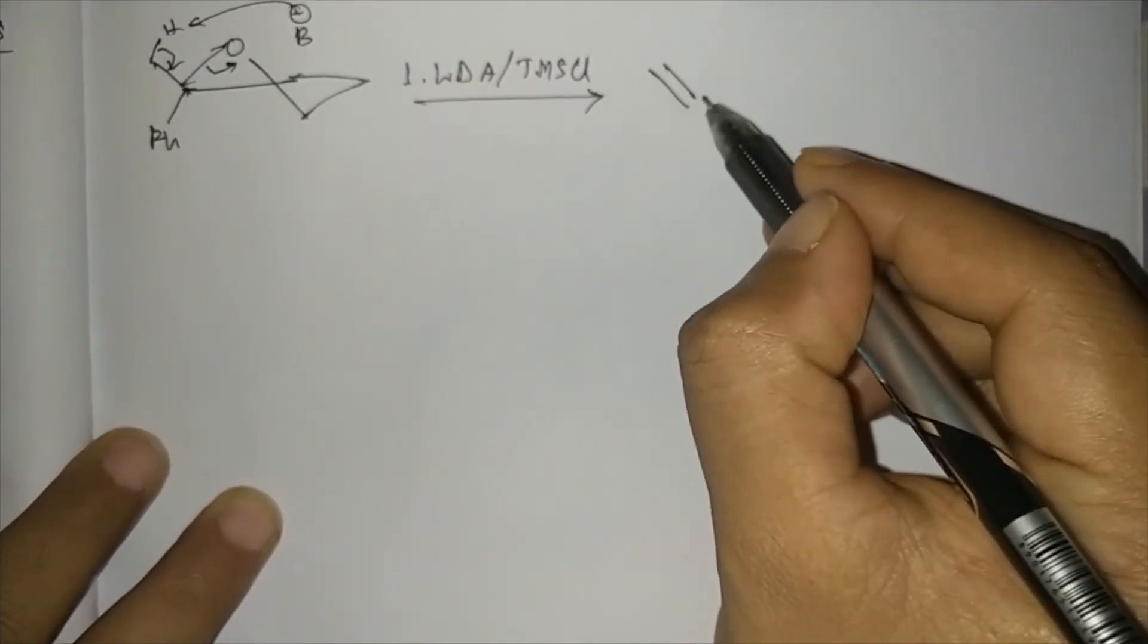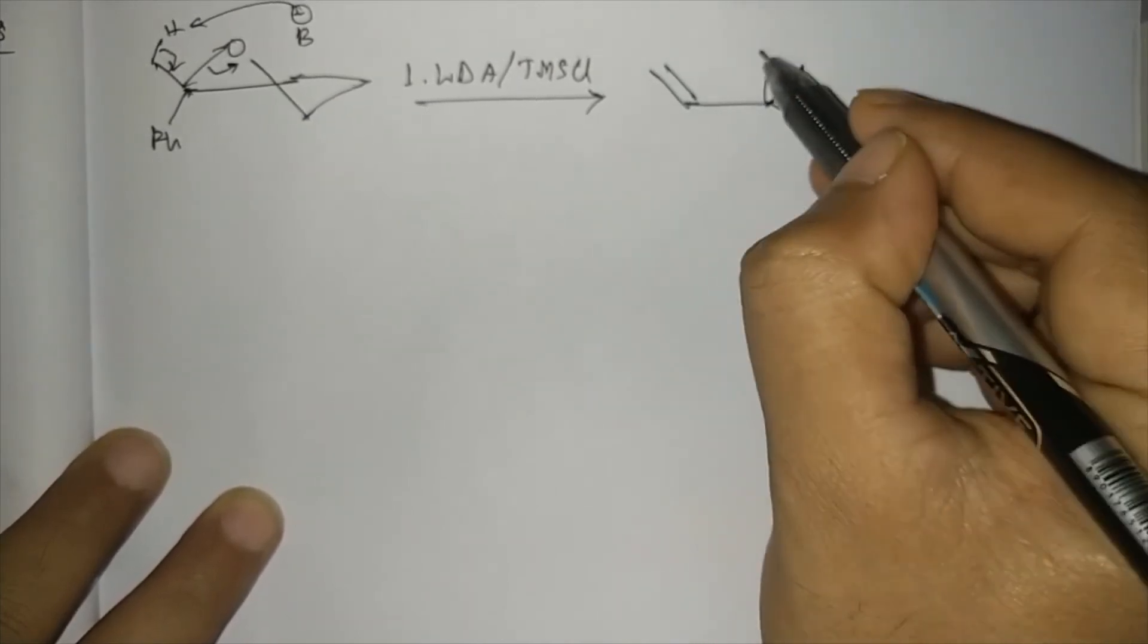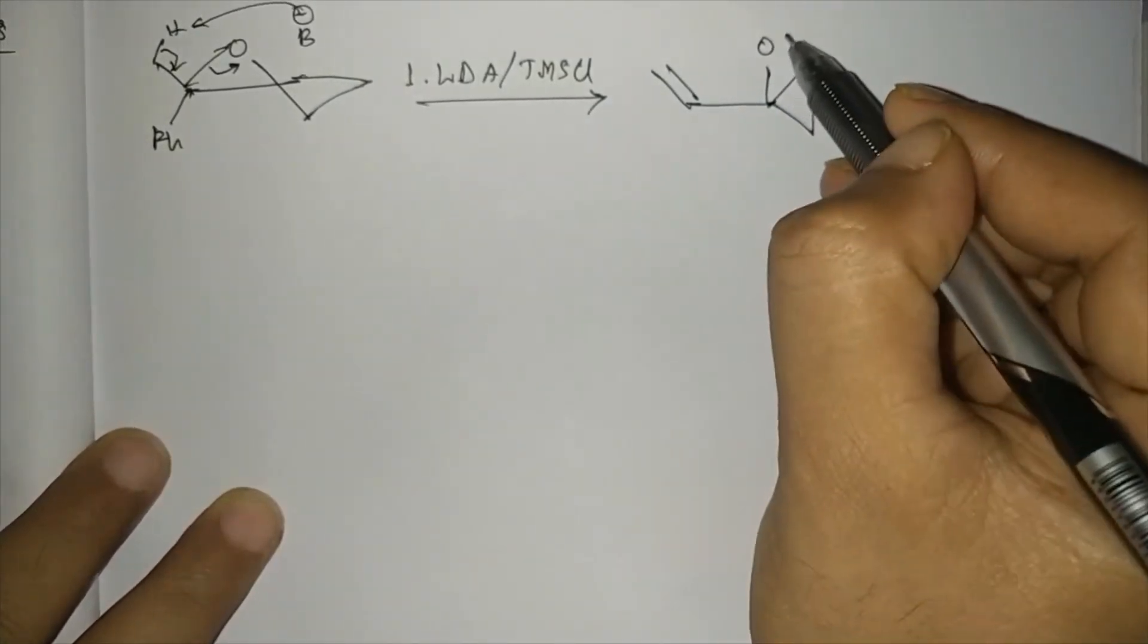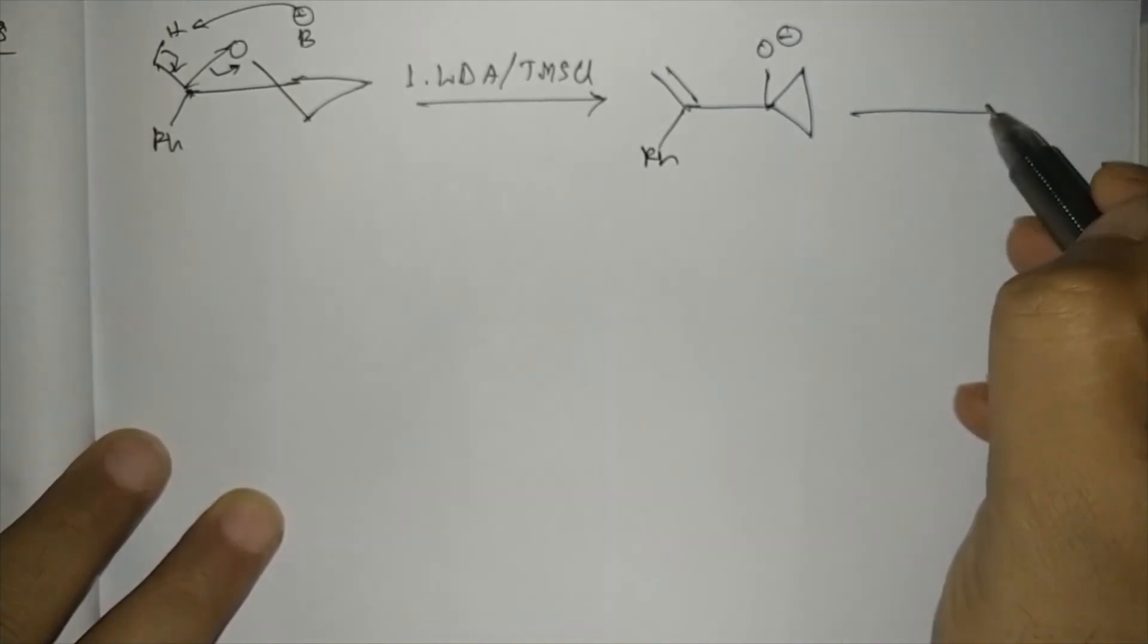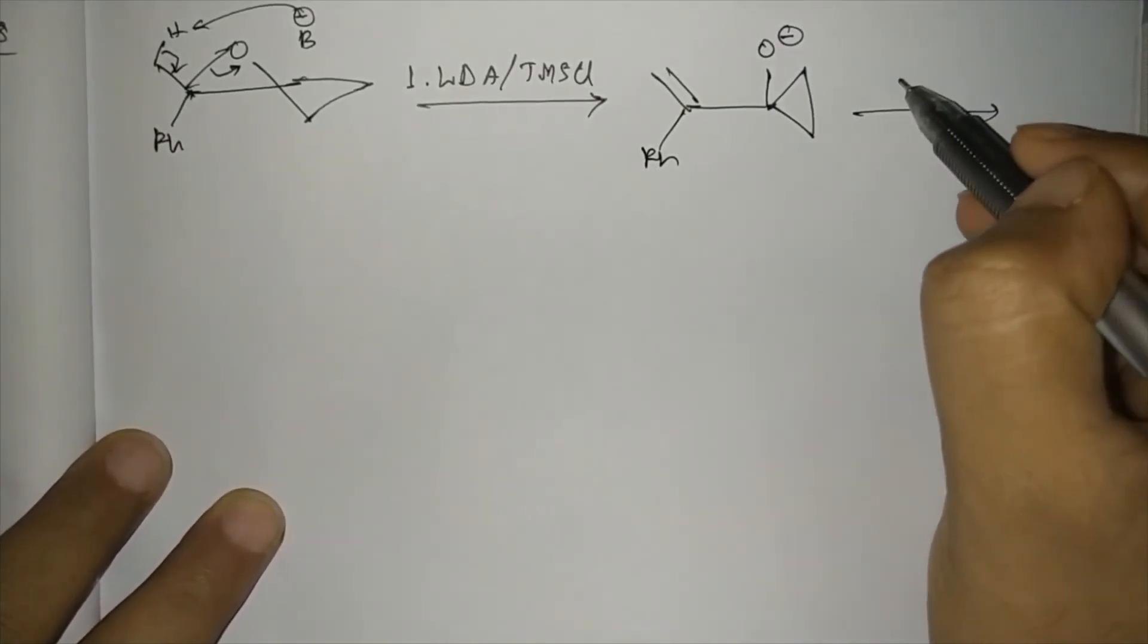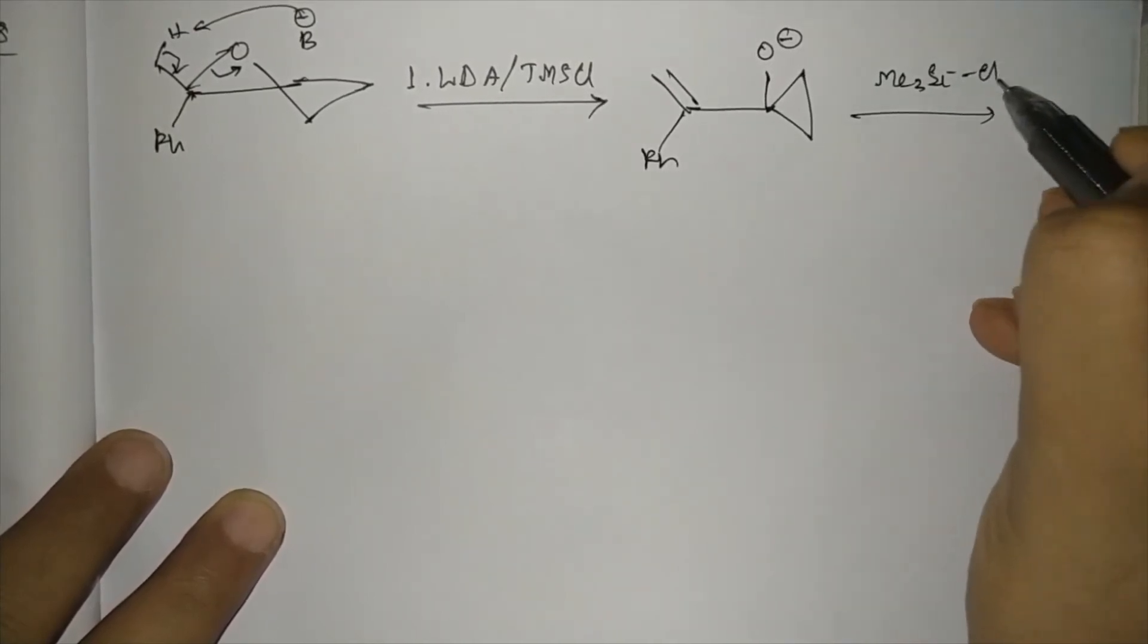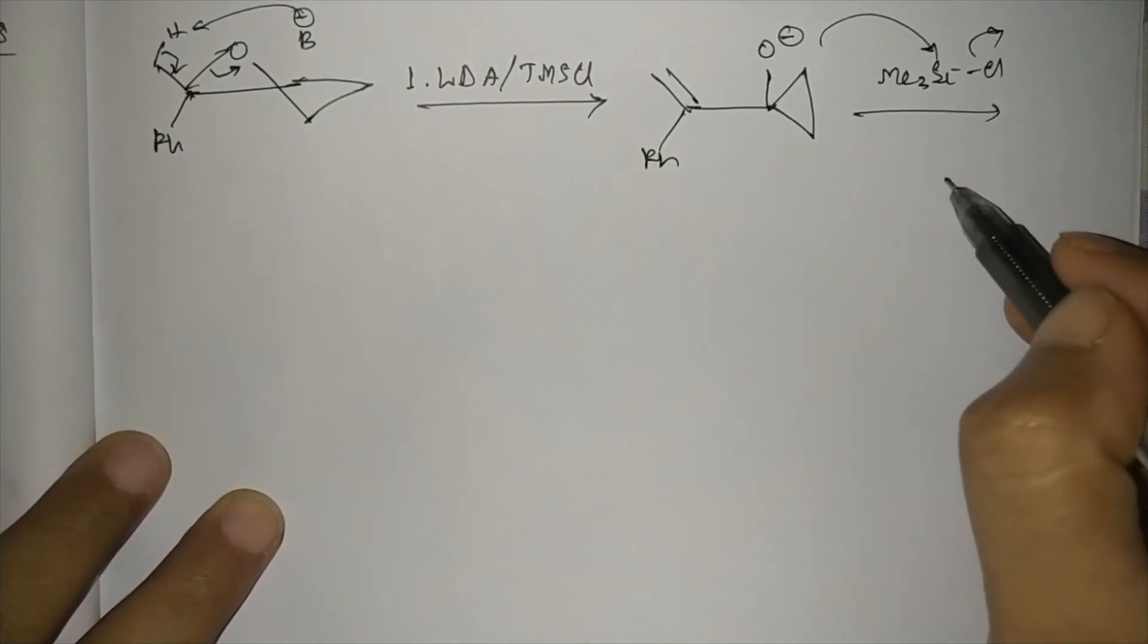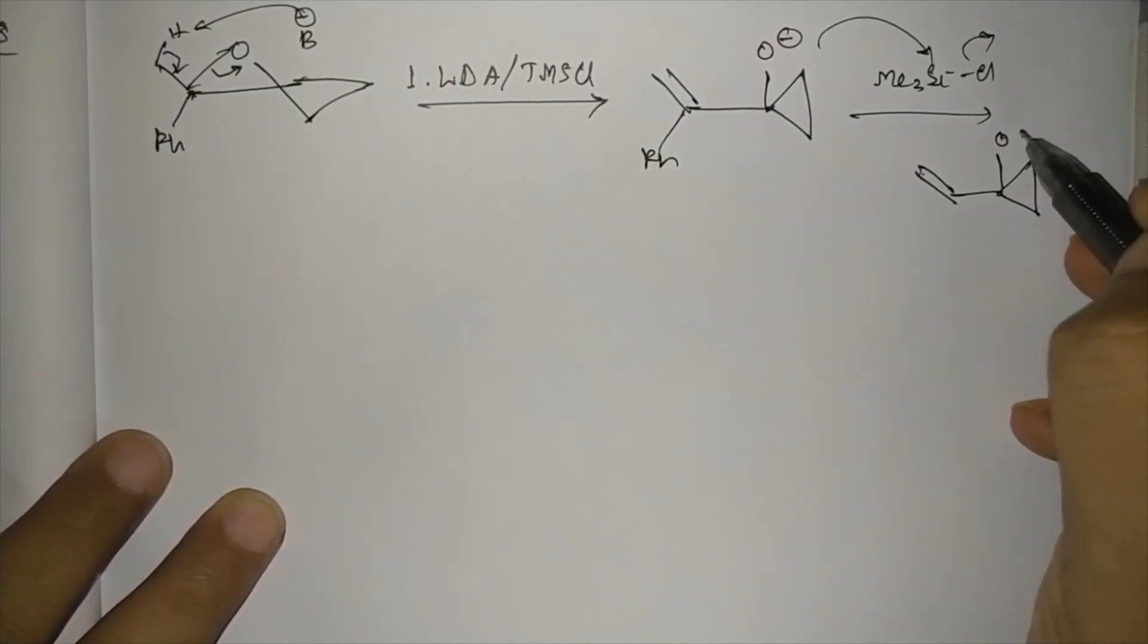So here a phenyl, this will be O-, and it will react with TMSCL. O-, phenyl, and it will react with TMSCL, so that this will form.